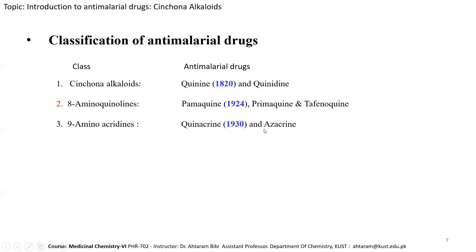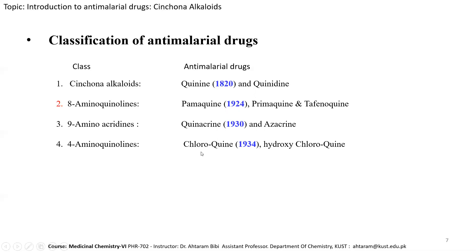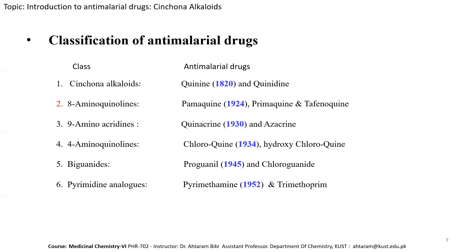The fourth class is 4-aminoquinoline; examples include chloroquine, synthesized in 1934, and hydroxychloroquine. This class is particularly noteworthy because doctors prescribed chloroquine and hydroxychloroquine for the treatment of COVID-19, showing these anti-malarial drugs also have anti-viral activity. The fifth class is biguanides; examples include proguanil, synthesized in 1945, and chloroguanide.